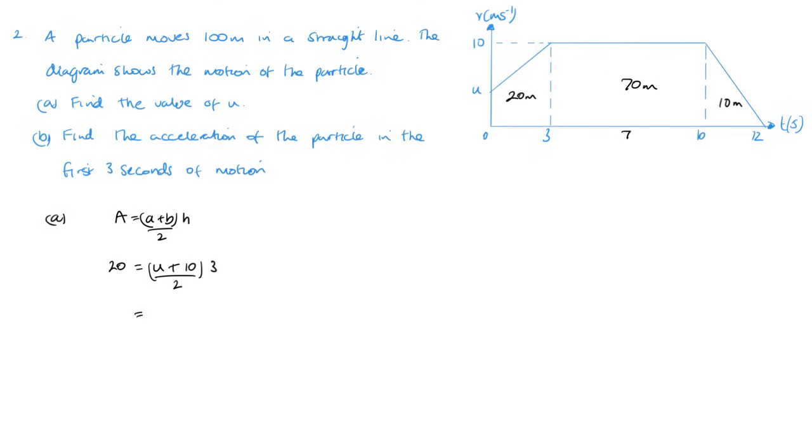Okay, so rearranging, times by 2 gives me 40 over 3. So u equals 40 over 3 minus 10, and that gives me 10 over 3 meters per second, or 3.3. Okay, so that is finding u.